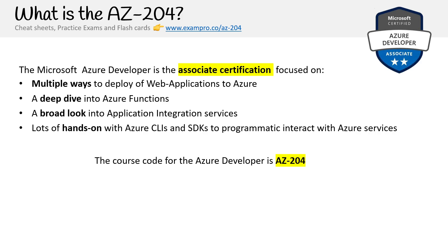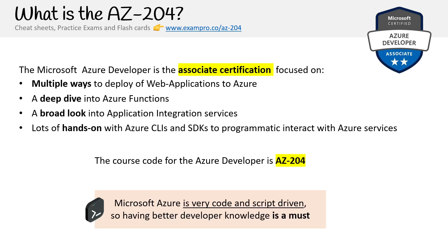The course code for the Azure Developer is AZ-204, not to be confused with the AZ-104. They are very complementary to each other, which we'll talk about when we discuss the roadmap. Microsoft Azure is a very code and script-driven platform compared to AWS and GCP, so having developer knowledge is better and is actually considered a must when working with Microsoft.